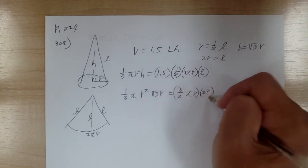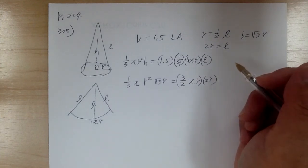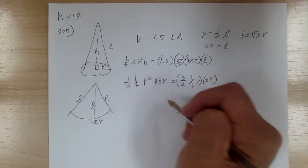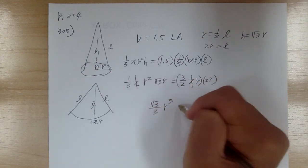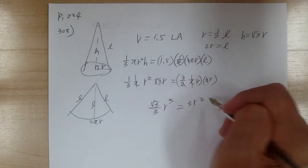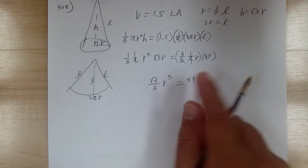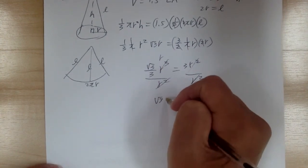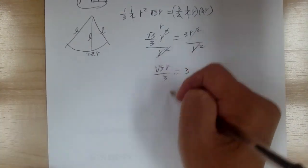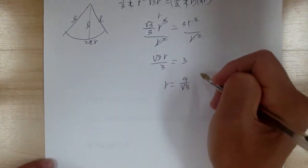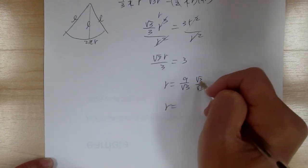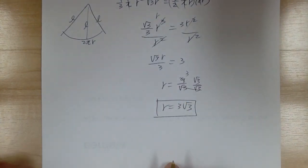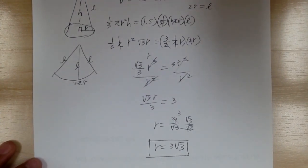Getting rid of π, we have square root of 3 over 3 times r³ equals 3r². Since r cannot equal 0, divide by r², giving square root of 3 times r over 3 equals 3. Solving for r gives r equals 9 over square root of 3. Simplifying, r equals 3 square root of 3. And that's it.